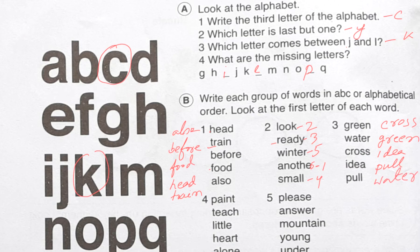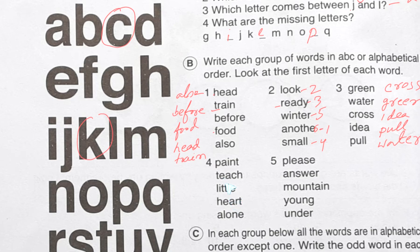I think you are understanding, these are so easy. Now let's do four number: paint, teach, little, heart, alone. Here this one will be first - alone. A B C D E F G H - hurt. K L - little. N O P - paint. And now teach. So see: first one is alone, second one is hurt, third one is little, fourth one is paint, and last one is teach.